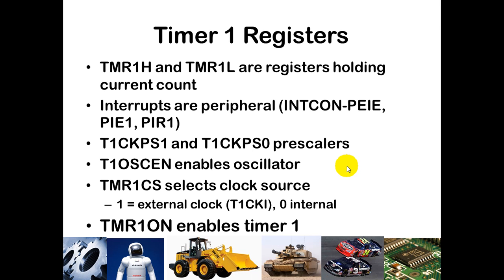To summarize: TMR1H and TMR1L are the high and low bytes respectively that keep track of the current count. There are several bits associated with enabling the interrupt and checking the flag, and since it's a peripheral interrupt, you need both the GIE bit and the PEIE bit set. There are prescalers available, and you can enable the oscillator with T1OSCEN to configure it with timer 1. TMR1CS determines whether your clock source is the external clock, oscillator clock, or internal counter. TMR1ON simply enables timer 1 by turning it on.